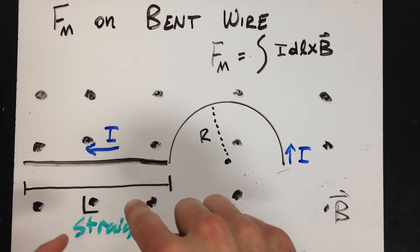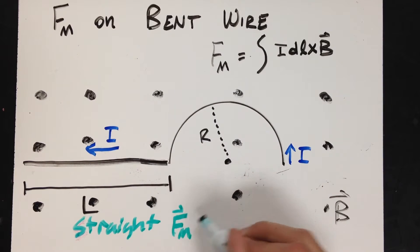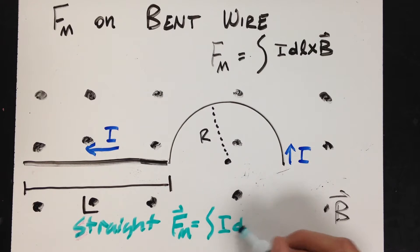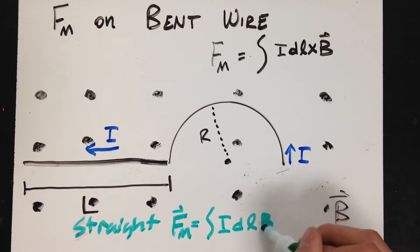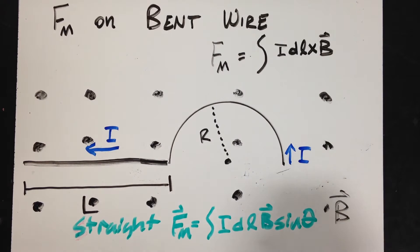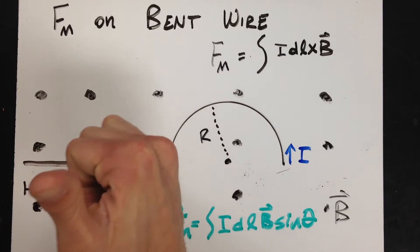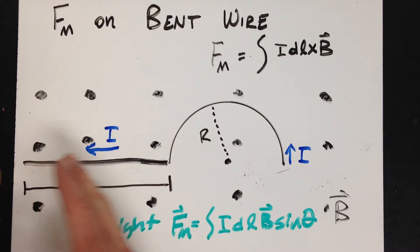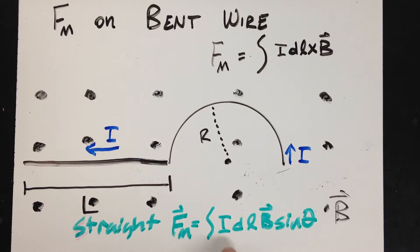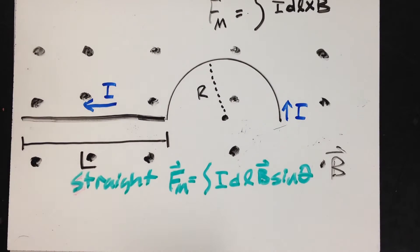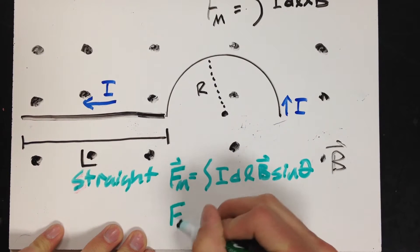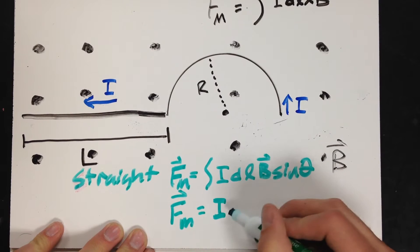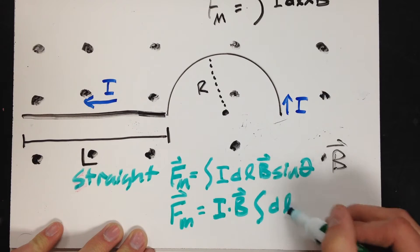For the straight section of wire, the magnetic force Fm equals the integral of I·dL·B·sinθ, where θ is the angle between the length of the wire and the magnetic field. The length vector runs horizontally and the magnetic field is coming out, so θ is 90 degrees and sin(90°) = 1. This simplifies to I·dL·B. Since the magnetic field and current through the wire are both constant, I can pull them out of the integral.